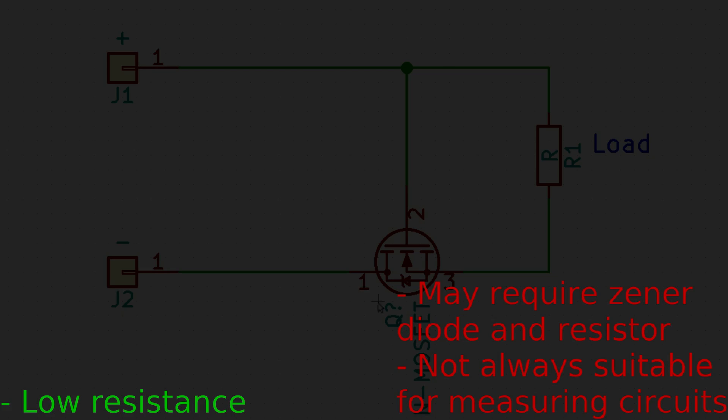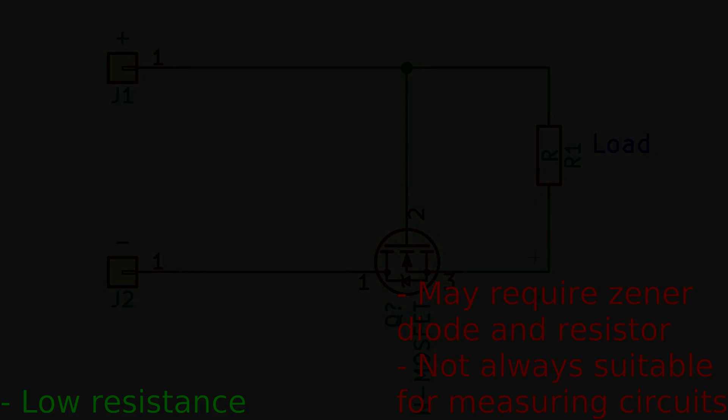You can also use an N channel MOSFET on the high side which is on the positive rail but it will require charge pump to actually activate it and it requires more hassle.